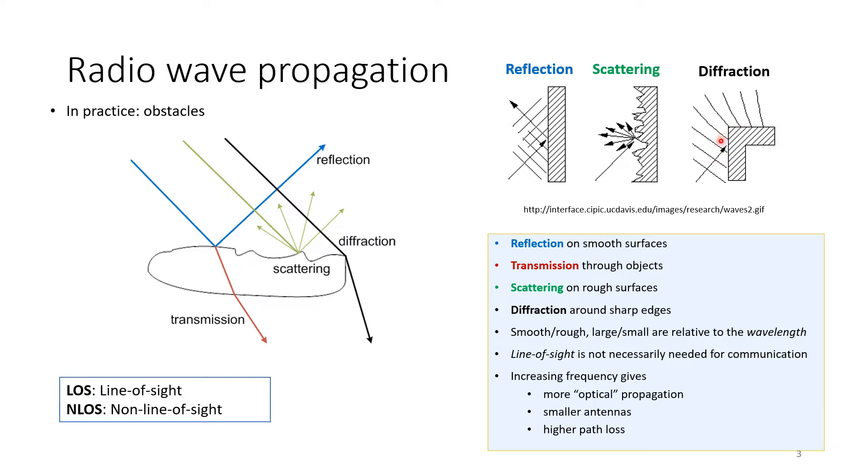Diffraction occurs at the edges, so the edges will re-radiate again. Reflection occurs on smooth surfaces. Transmission occurs through the objects. Scattering occurs on rough surfaces, diffraction on the sharp edges. Smooth, rough, large, and small are all relative to the wavelength.